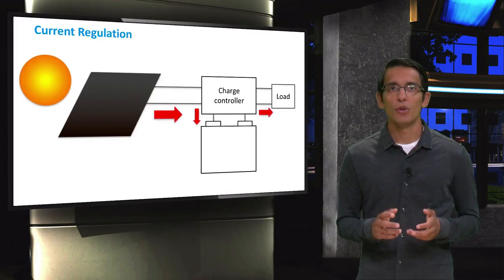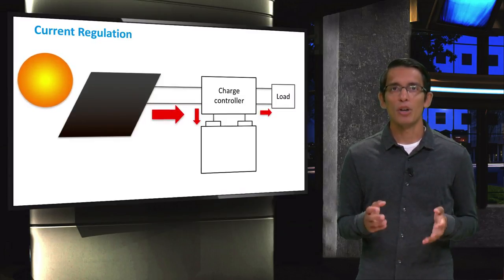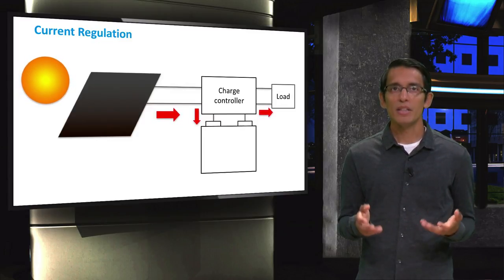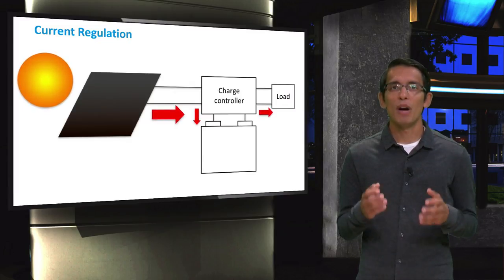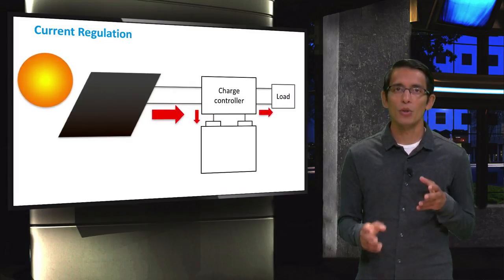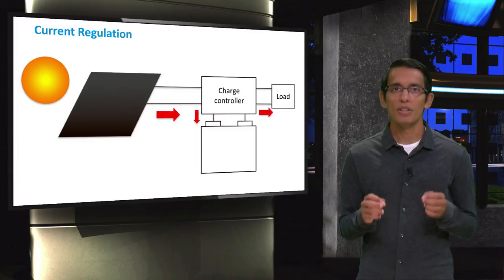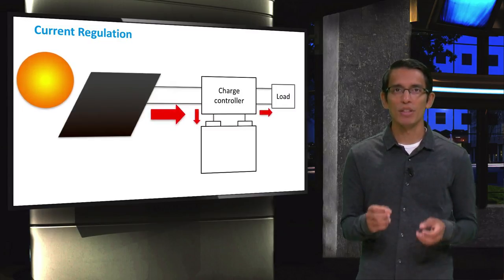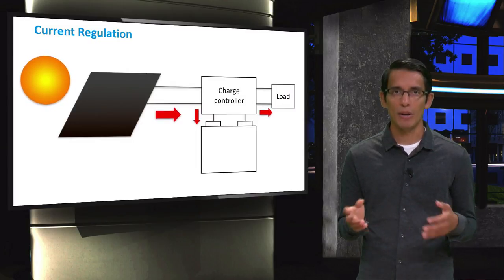Another function of the charge controller is current regulation. Consider a battery which is being charged or discharged at a faster rate than a nominal rate. This leads to a reduction in the efficiency of the battery. But a charge controller with a proper current regulation can be used to control this by maintaining the rates close to its C-rate, which is the battery's nominal parameter. The charge controller does this by imposing limits on maximal currents flowing into or out of the battery.